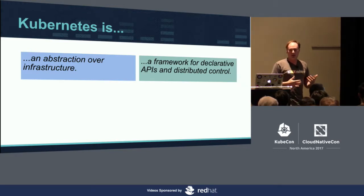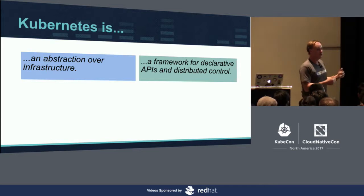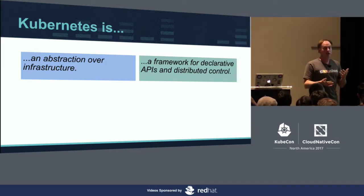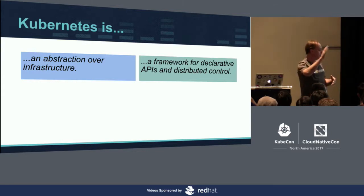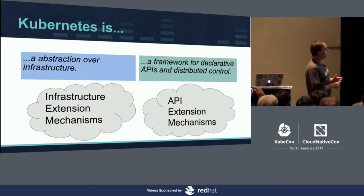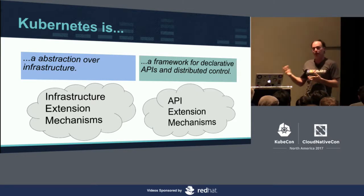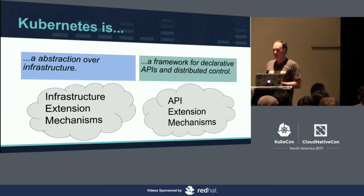I like to say that Kubernetes is really two separate things: it's an abstraction over infrastructure, and it's also a framework for declarative APIs and distributed control — and those are actually pretty separate. We've got a dozen extension mechanisms, and it's useful to categorize them into two rough groups: infrastructure extension mechanisms and API extension mechanisms. Daniel and I are going to divide this up — I'll talk about infrastructure extensions, and then Daniel will dive into the API.